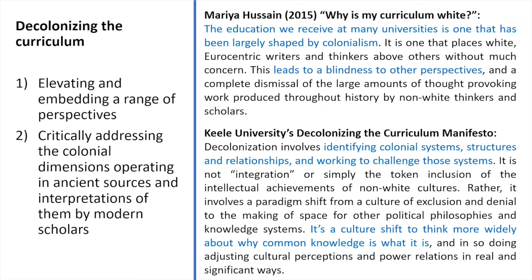I've identified two points that inform what I'm trying to do with my teaching: elevating and embedding a range of perspectives, but also critically addressing the colonial dimensions operating in ancient sources and in interpretations by modern scholars. This is very relevant for the age of Augustus, where we have the creation of a new range of political culture that is very much dependent upon manipulating the views of other cultures in different parts of the empire. Today I'll focus on just two examples to give you ideas and materials for how you might embed this in your own teaching practice.